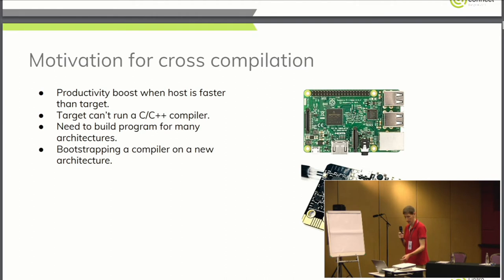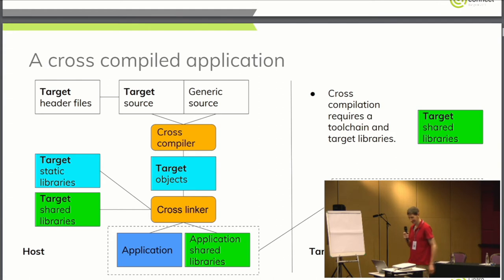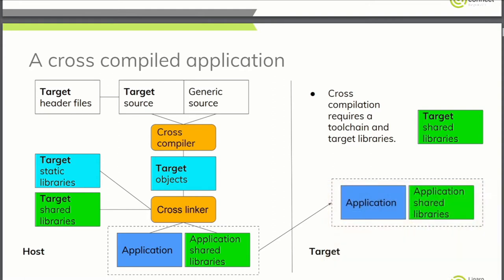A quick slide about some challenges you might encounter with cross-compilation. When cross-compiling for an embedded system, you typically get everything compiled statically, so all dependencies come with you. If you're cross-compiling for Linux and compiling against shared objects, you have to make sure those shared object paths on the host side match what you have on the target. Otherwise, when you run your application on the target, it won't find the shared libraries.